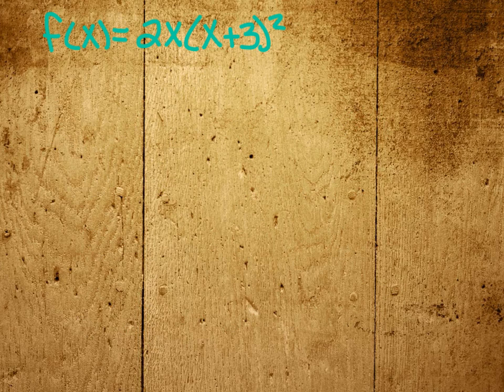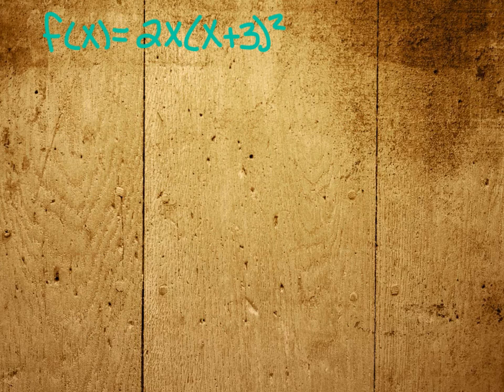When you have it in factored form, the first thing that you can find, the quickest thing you can find, are your zeros. And just like we've done before in the past, if I set each factor equal to zero, then I should be able to find all the zeros of this function.